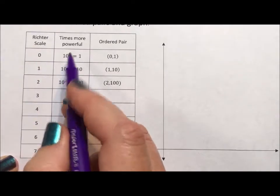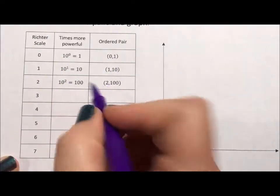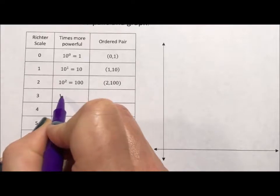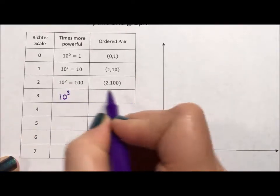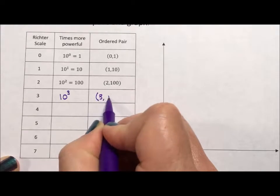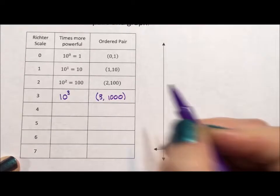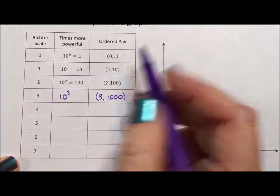Now, Richter scale, again, is exponents for 10, so it starts for us, but an earthquake that rates a 3 is actually 1,000 times stronger than no earthquake at all.